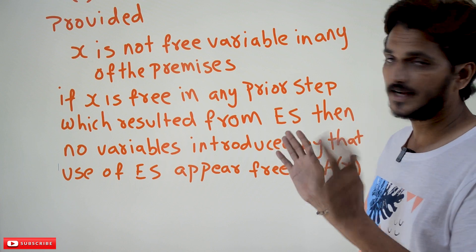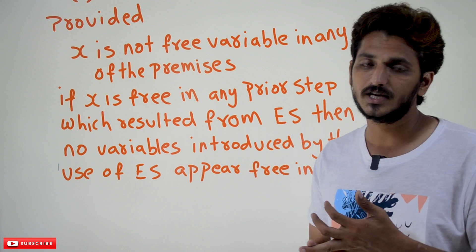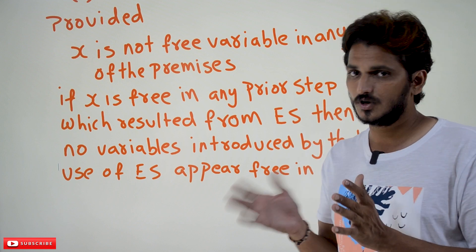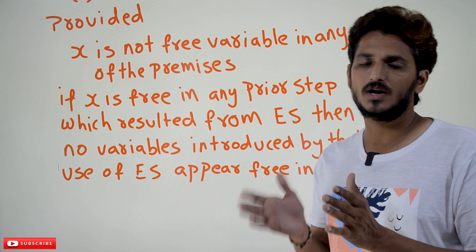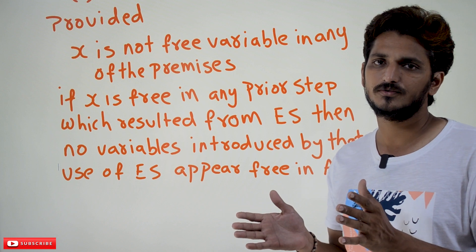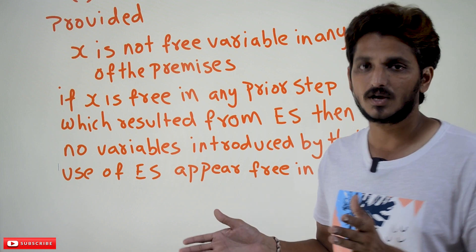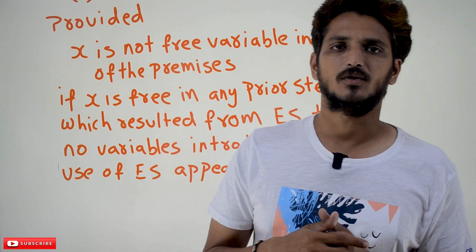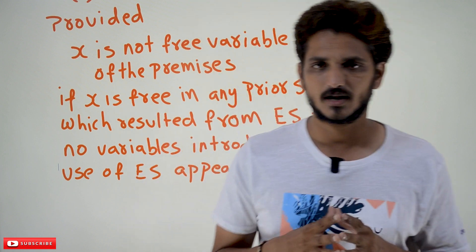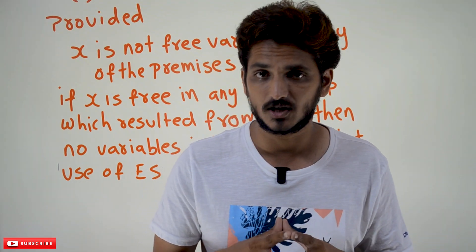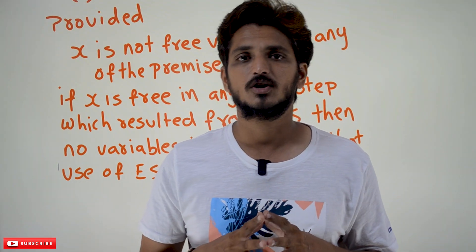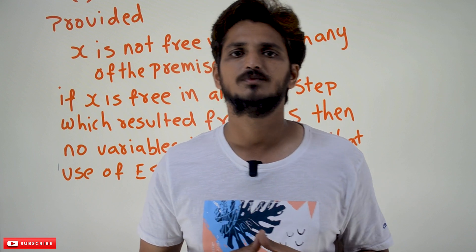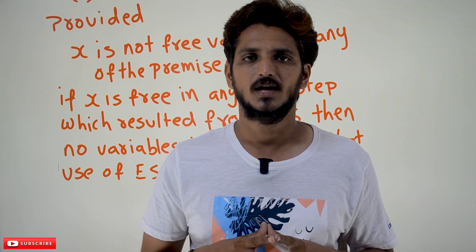These universal and existential generalization and specification rules are going to be used in our next examples. With examples you are going to get very good clarity, so please do the examples. After that, if you have any questions, come back and watch these topics again, then do the examples again. Hope you understand universal generalization. If you have any questions regarding the concept, please post in the comment section below. Thanks for watching. If you have not subscribed, please subscribe to our channel and press the bell icon for the latest updates. Thank you.